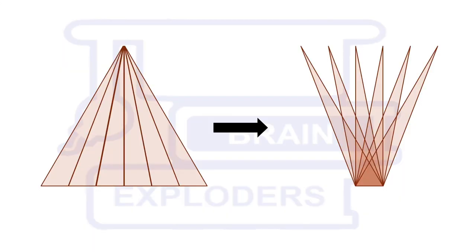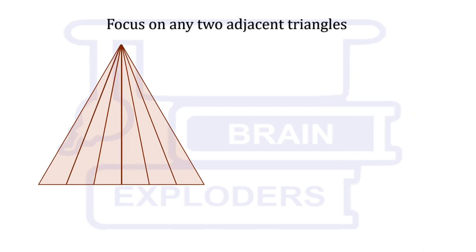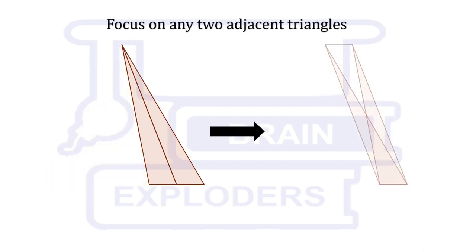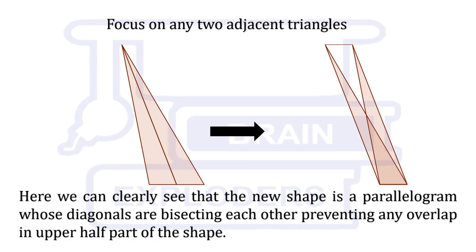This was the figure which we used to rotate our needle. Focus on any two adjacent triangles. After overlapping, the figure will look something like this. The distance between the vertex of both triangles is equal to the base of the triangles, and their common sides are now separated and are parallel sides of a parallelogram.